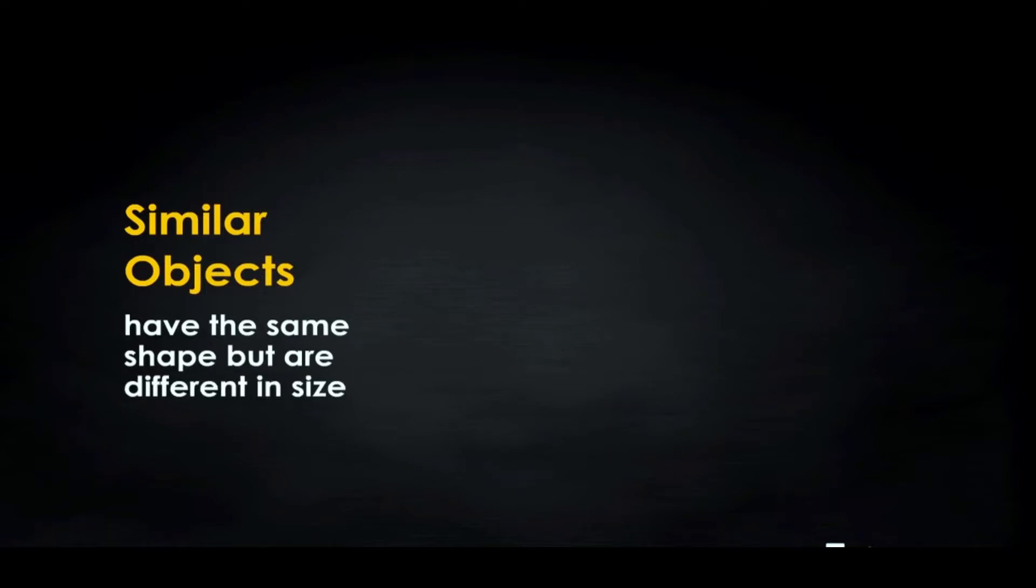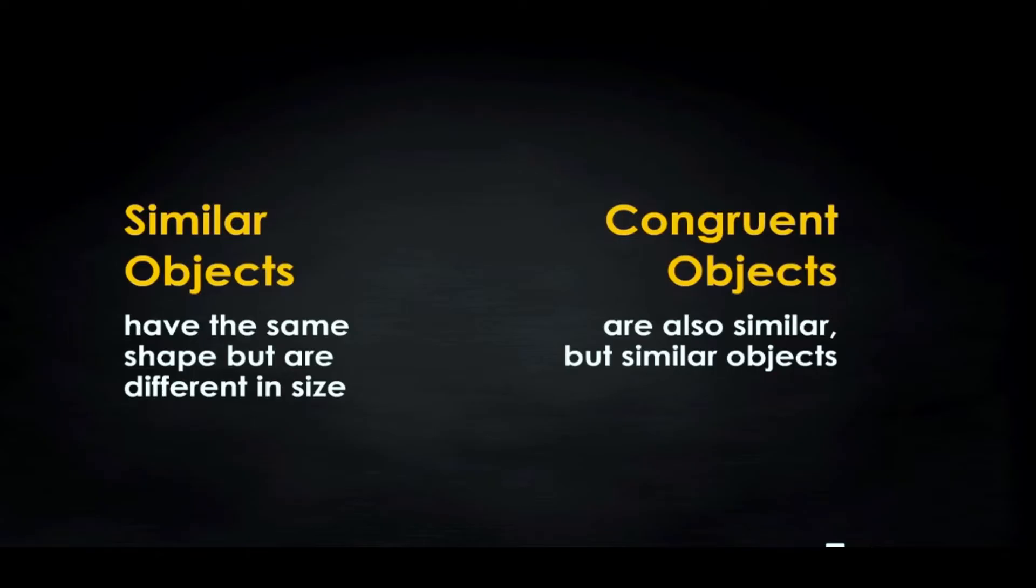First, let's recall that two geometric shapes are similar if they have the same shape but are different in size. Congruent objects are also similar, but similar objects are not congruent.